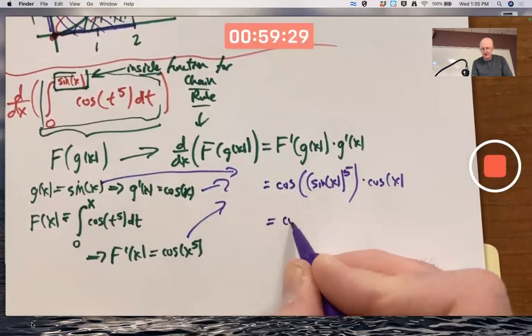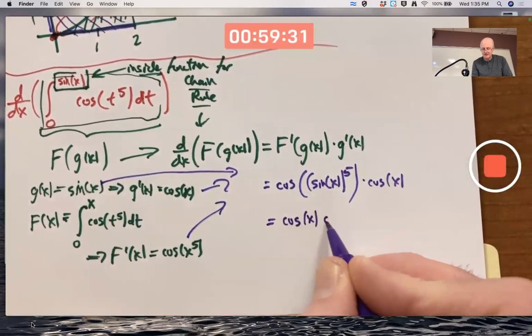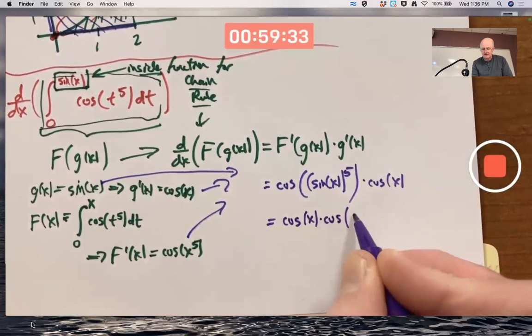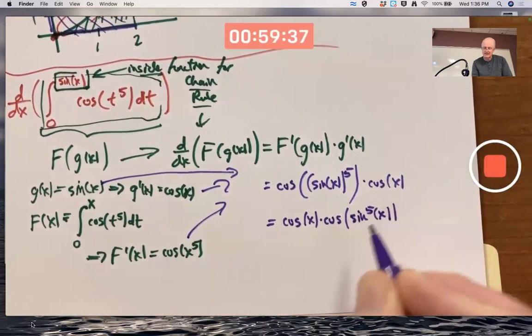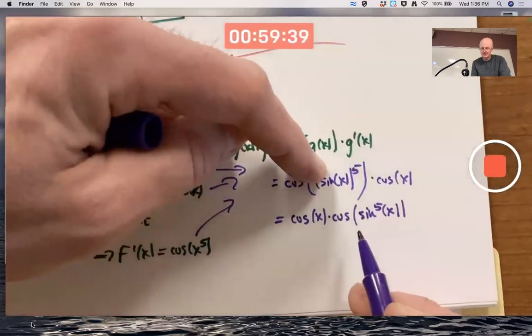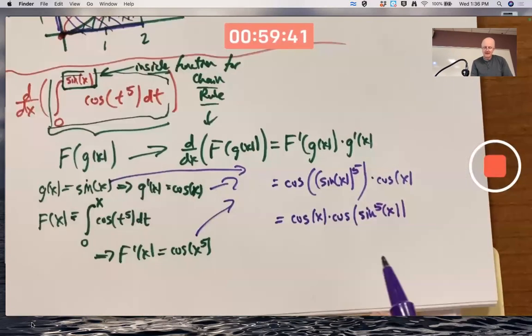It's more traditional, probably, to write it like this. Cos x times cos of sine to the fifth x. What that notation means is really sine of x, quantity to the fifth, when I write that. That's the answer.